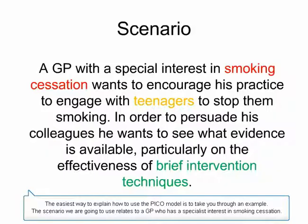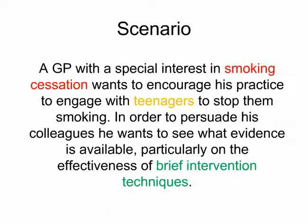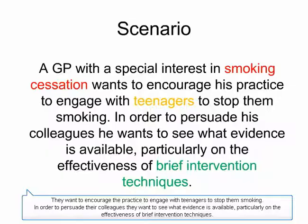The easiest way to explain how to use the PICO model is to take you through an example. The scenario we are going to use relates to a GP who has a specialist interest in smoking cessation. They want to encourage the practice to engage with teenagers to stop them smoking. In order to persuade their colleagues, they want to see what evidence is available, particularly on the effectiveness of brief intervention techniques.